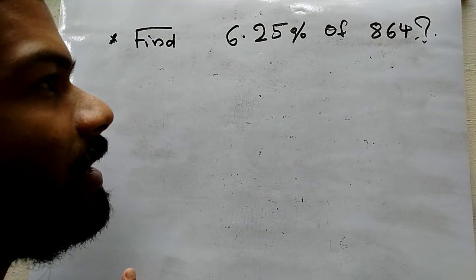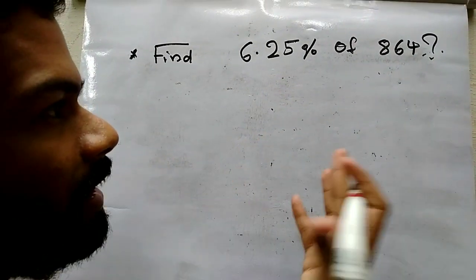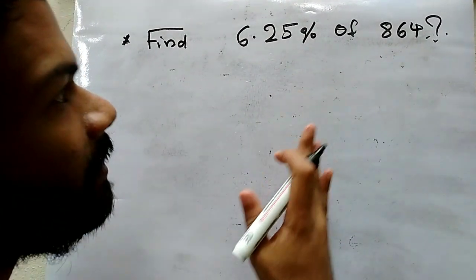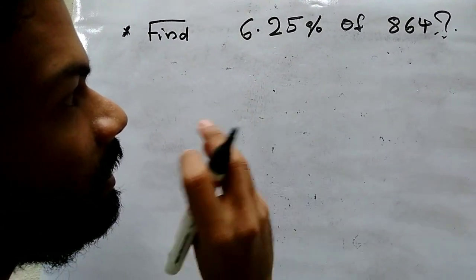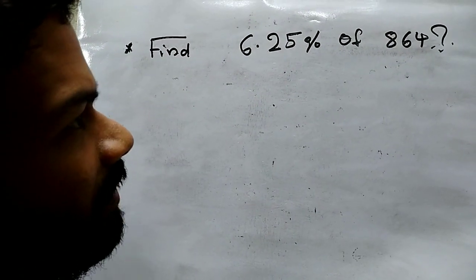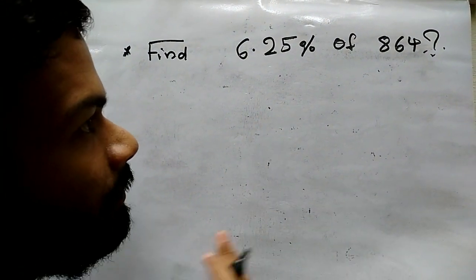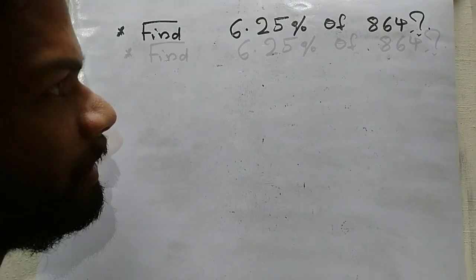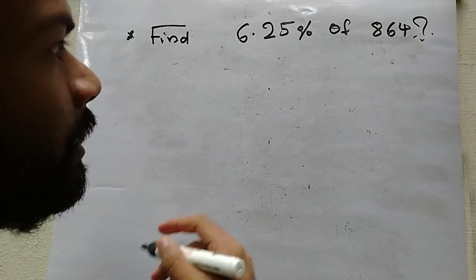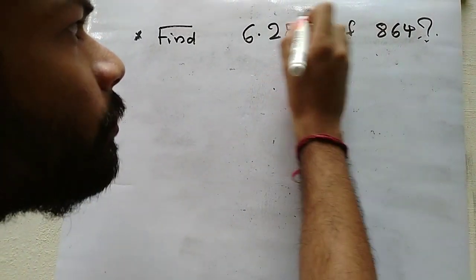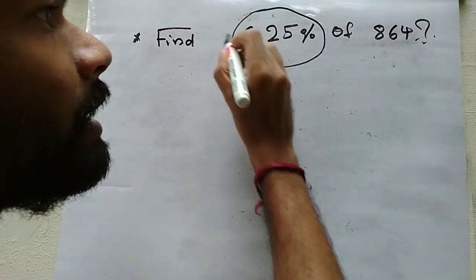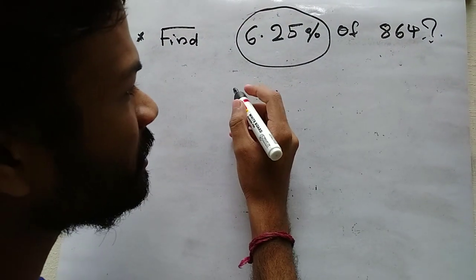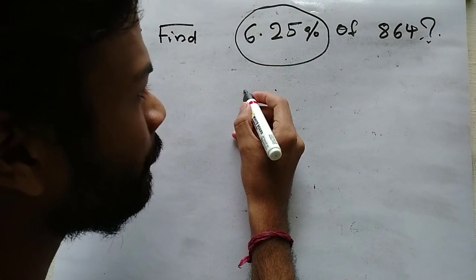In my trick, you don't need to multiply or do all those steps. You only need to use your logic, and you can find the answer very easily. I will explain how you can do this. Please listen carefully — we need to find 6.25 percentage of 864.